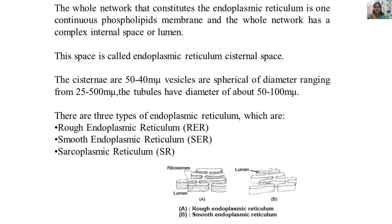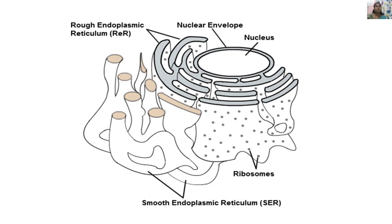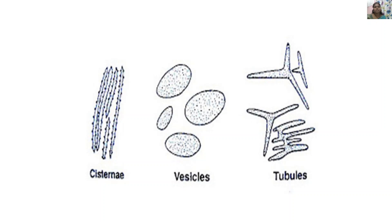There are three types of endoplasmic reticulum: rough endoplasmic reticulum, smooth endoplasmic reticulum, and sarcoplasmic reticulum. The rough ER appears rough due to ribosomes; in their absence it appears smooth, and is called smooth endoplasmic reticulum. The three important structural parts of the endoplasmic reticulum are cisternae, vesicles filled with protein molecules, and tubular structures.